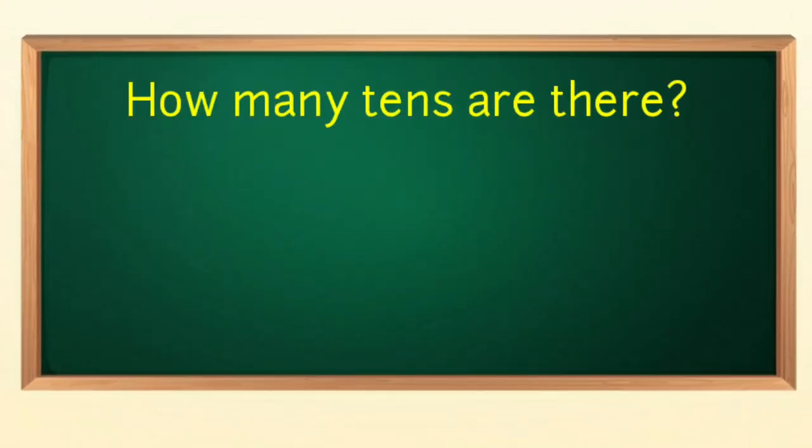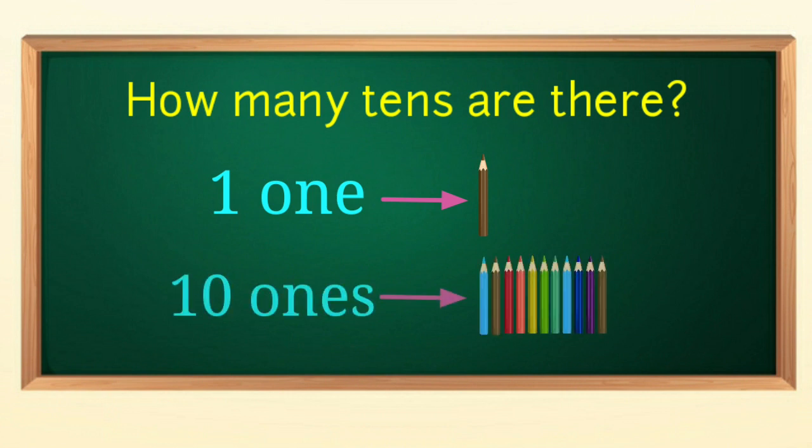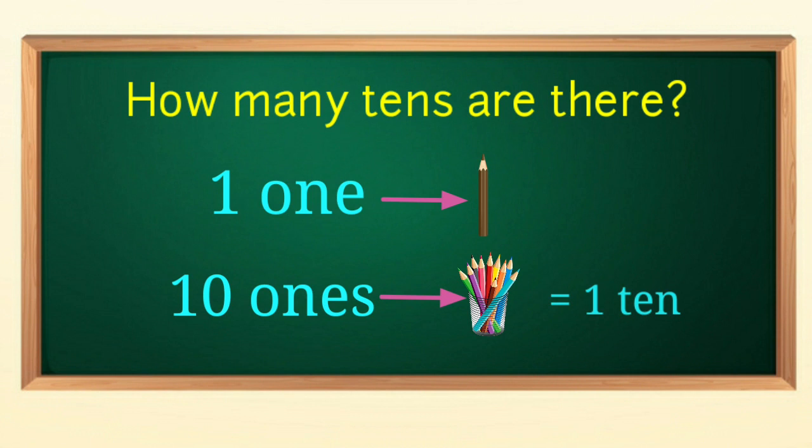Children, let's see how many tens are there. We know that one one means one color pencil. Therefore, ten ones means ten color pencils. So, if we group ten color pencils together in a glass, we get one ten color pencils.